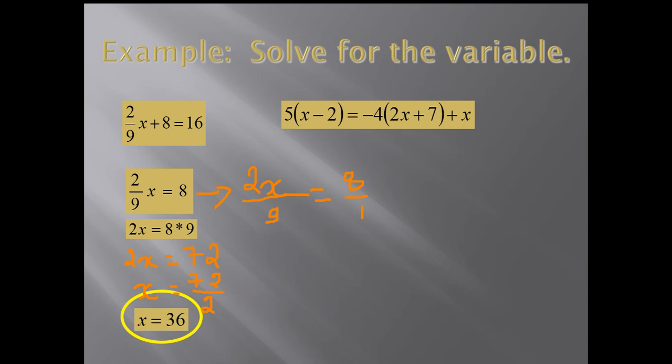Now, another example. I need to solve this expression, this big expression. 5 times x minus 2 is equal. First, I need to distribute, and then I will isolate x. So, I will have 5x minus 10, minus 8x minus 28, and plus x.